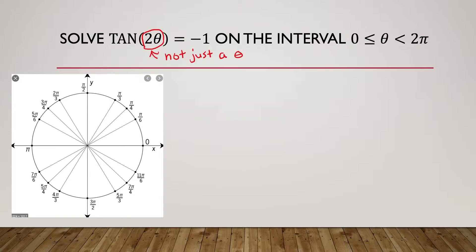The problems we did at the beginning of this section would have looked like tangent θ equals negative 1, and those were fairly easy to solve. But the fact that we have something other than just theta inside the parentheses means it's going to be a little more difficult. So keep that distinction in mind: easier problems just have theta; ones requiring more work have something else inside those parentheses.